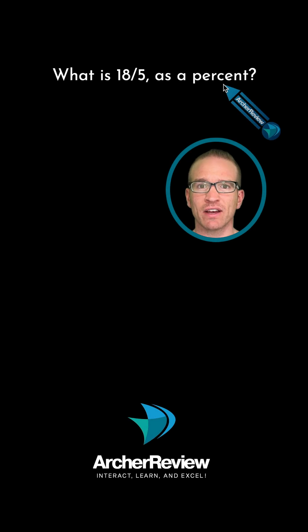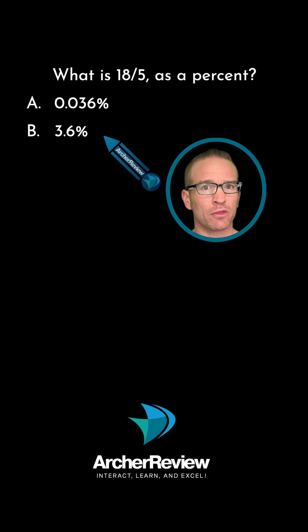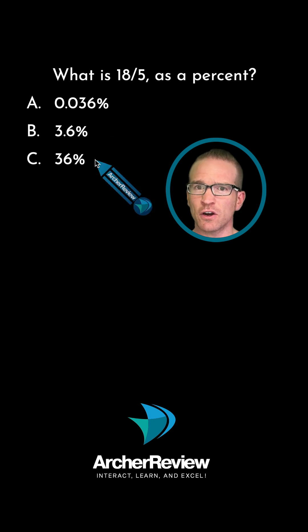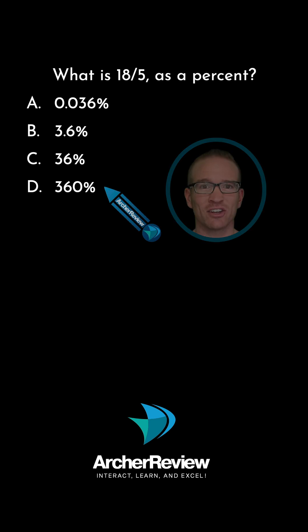What is 18 over 5 as a percent? Is it A, 0.036%, B, 3.6%, C, 36%, or D, 360%? Pause the video and give it a try.